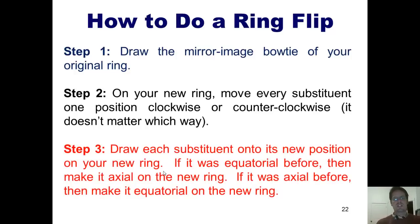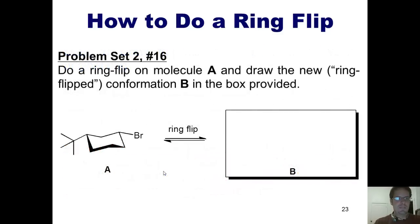Step three, draw each substituent onto its new position on your new ring. If it was equatorial before, then make it axial on the new ring. If it was axial before, then make it equatorial on the new ring.